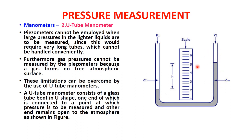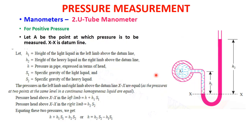Due to the pressure difference, there will be a difference in levels of the manometric fluids — such as mercury or alcohol. Using the limb-level difference created by the pressure, we can easily find the pressure at that particular point. Pressure measurement can be done in two stages: finding gauge pressure (positive pressure) or vacuum pressure (negative pressure).